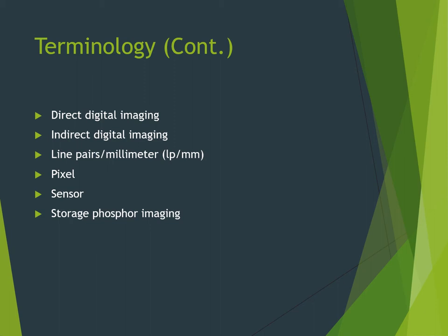Line pairs per millimeter (lp/mm) is a measurement used to evaluate the ability of the computer to capture the resolution or detail of an image. A pixel — which we're all aware of because we all take pictures — is a discrete unit of information in digital electronic images. Digital information is contained in and presented as discrete units of information, also termed a picture element. Each little tiny square that makes up the overall whole picture is a pixel.